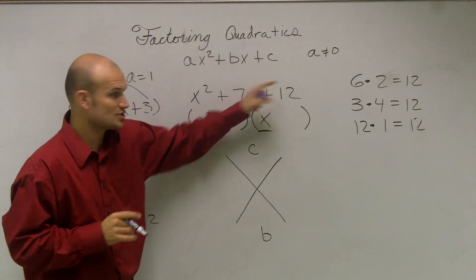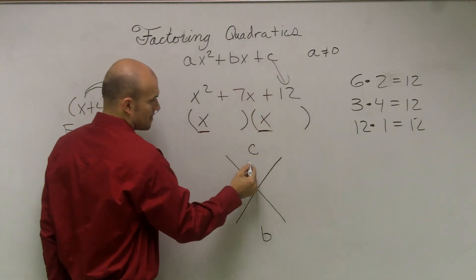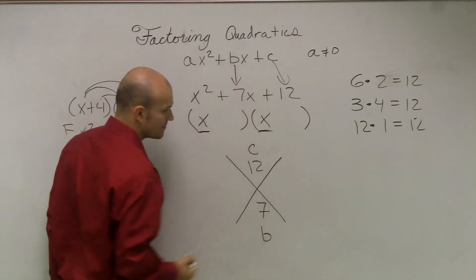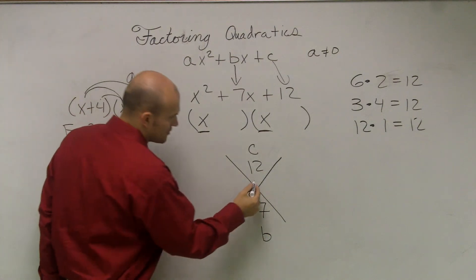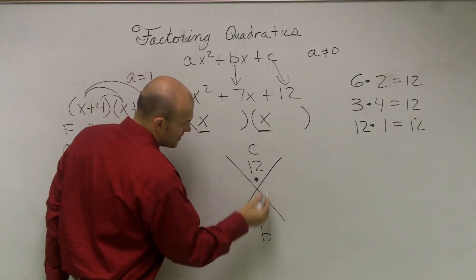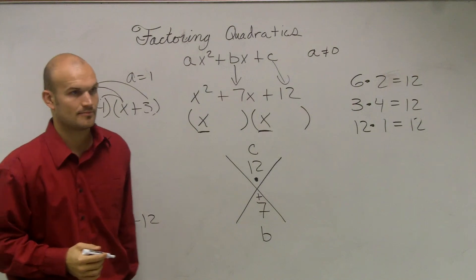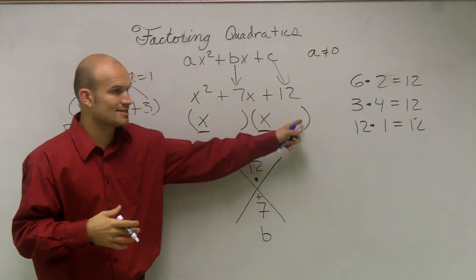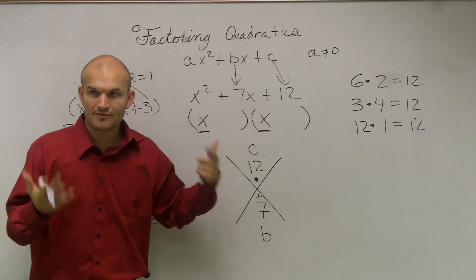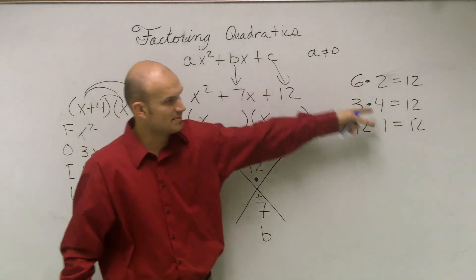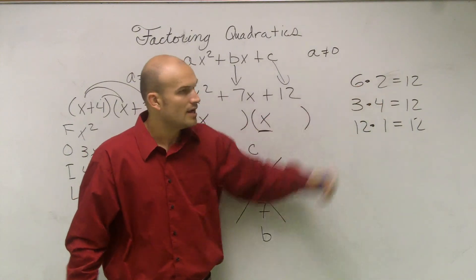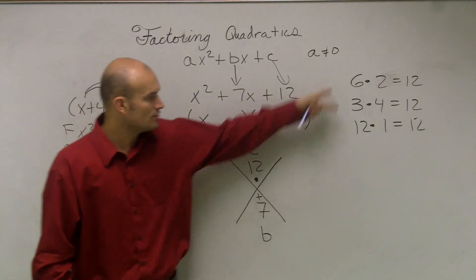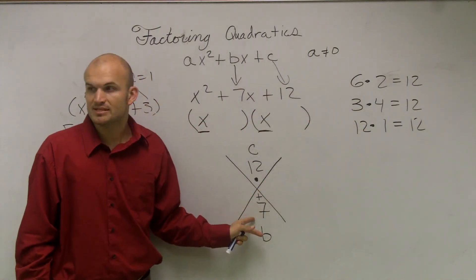Okay. So we have C is 12, right? C is 12. So you're going to write C there. And B is 7. So we're going to write a 7 there. Then, up top, I'd like you to write a multiplication symbol. And then down here, I'd like you to write an addition symbol. Okay? So what you're going to do to help you figure out what is the correct number here, you're going to do a little puzzle game. So you're going to take all the numbers that multiply to give you 12.